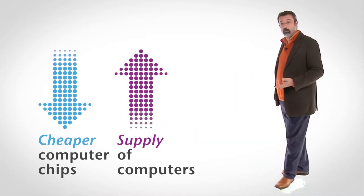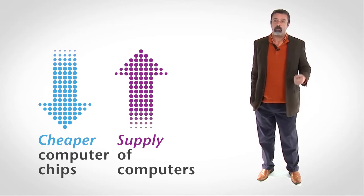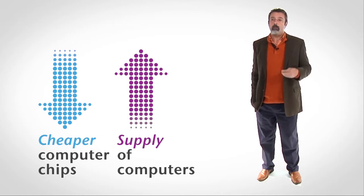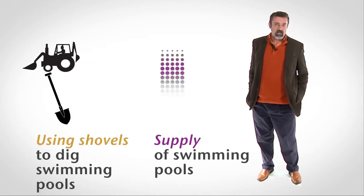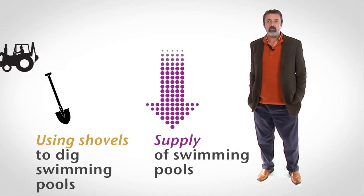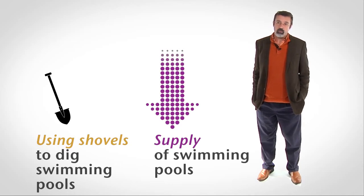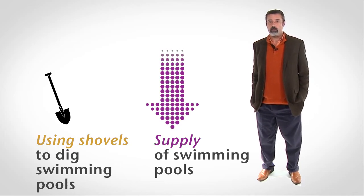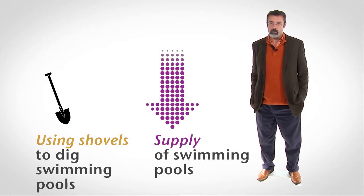For example, making computer chips cheaper makes it easier for computer producers to offer computers, so making computer chips cheaper increases the supply of computers. Using shovels instead of a backhoe to dig swimming pools makes it harder to produce swimming pools, so using shovels instead of backhoes decreases the supply of swimming pools.